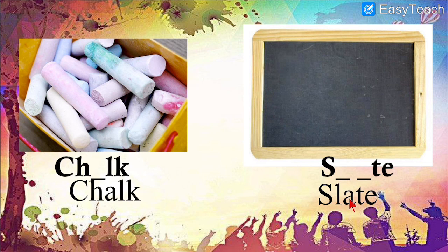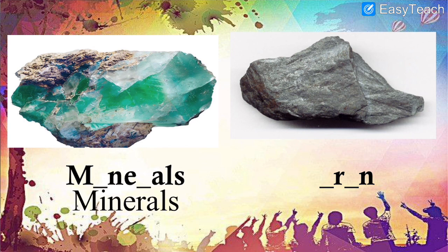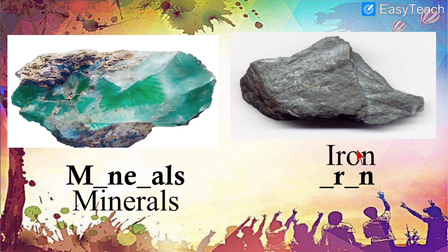Chalk and Slate. Then over here — what does this image show? This is the image of Iron. It starts with I, and as I told you, R is silent.